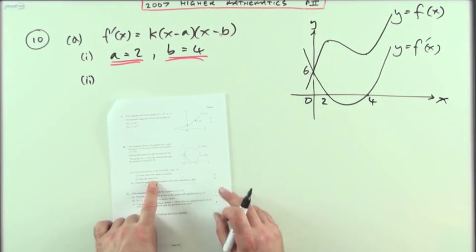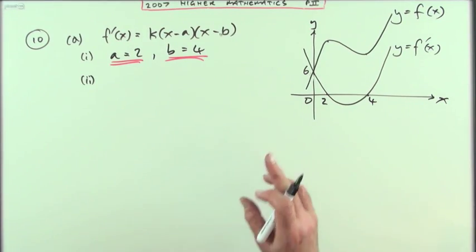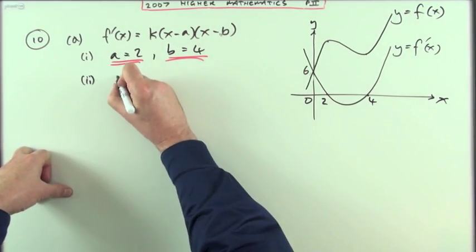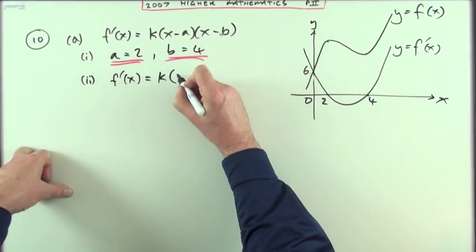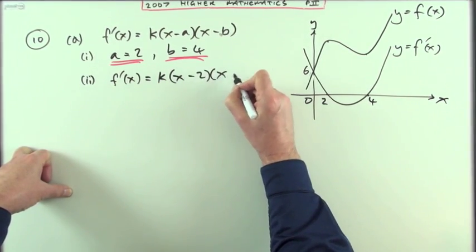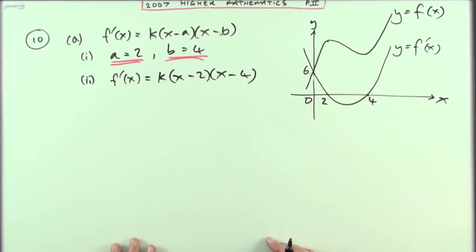Now part b. Find the value of k to finish off the three marks. Well that equation, I'll just put this down again. Now it looks like this. f'(x) is k times and I know it's x minus two and x minus four. That's the form of it.